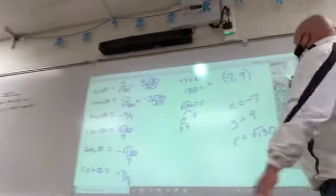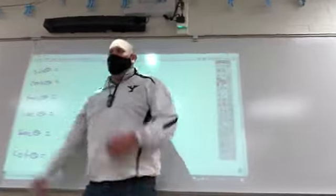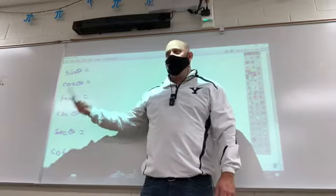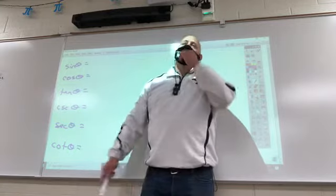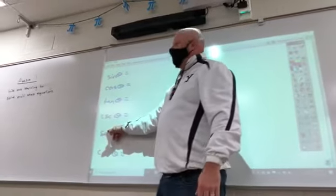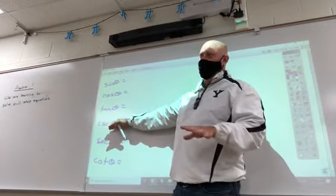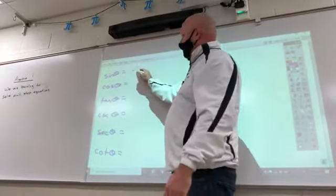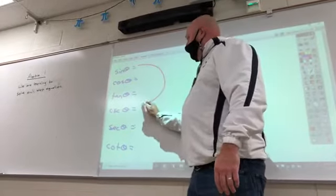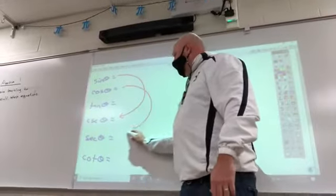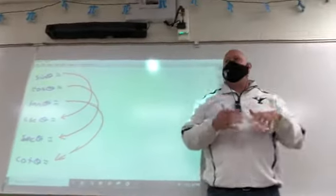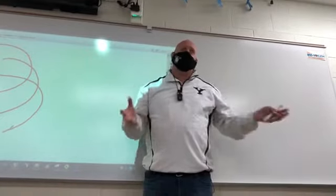On your homework, you don't get to abbreviate these — these are already abbreviations. You don't get to abbreviate an abbreviation. The mistake people make is it seems like the S's should go together and the C's should go together, but they don't. Remember: sine goes with cosecant, cosine goes with secant, and cotangent goes with tangent.